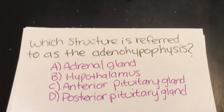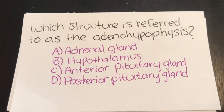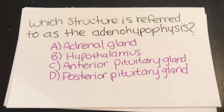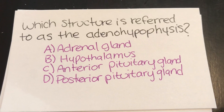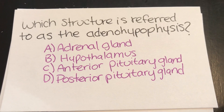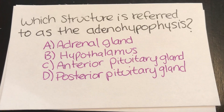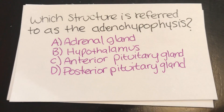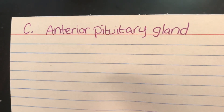Which structure is referred to as the adenohypophysis? A, the adrenal gland. B, the hypothalamus. C, anterior pituitary gland. Or D, posterior pituitary gland. Answer: C, anterior pituitary gland.